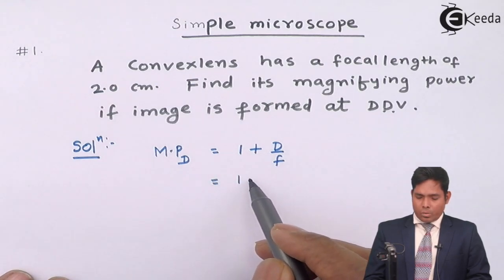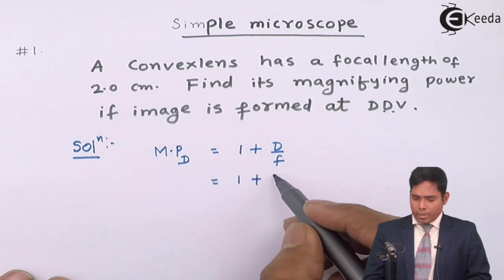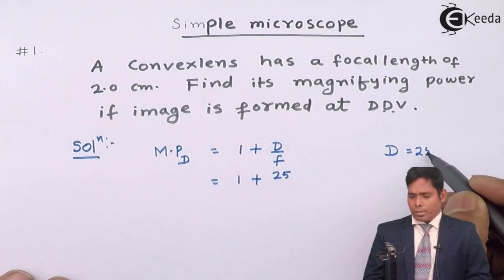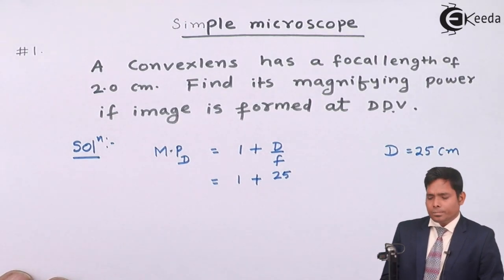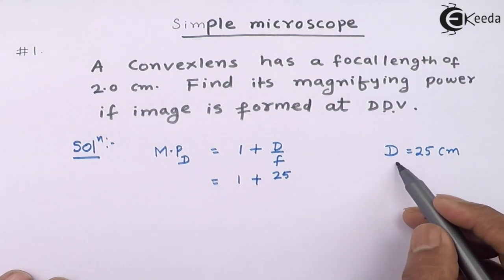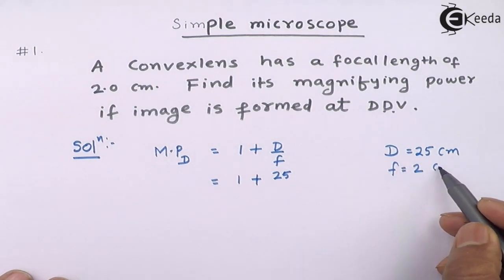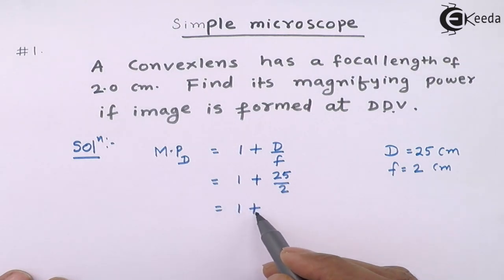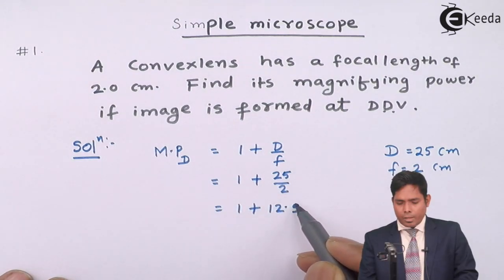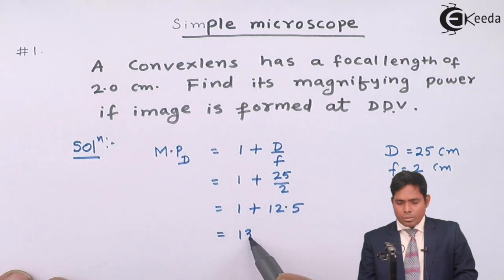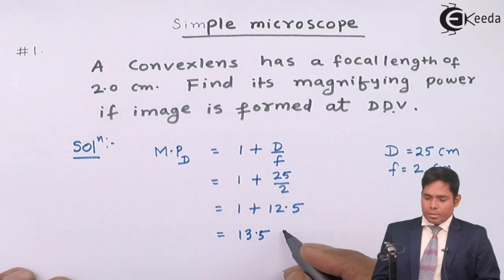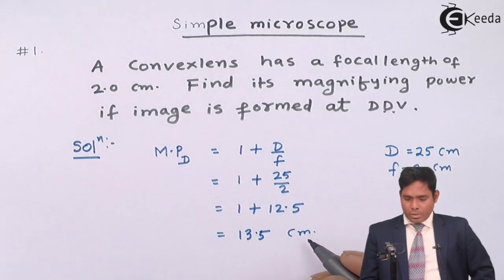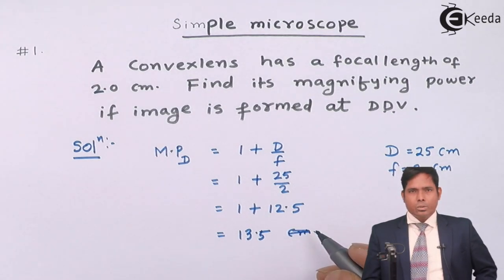Now, I put the value 1 plus D. I will take 25 cm because distance of distinct vision for a normal eye is 25 cm and the focal length given is 2 cm. So, it is divided by 2. It is 1 plus 12.5 which is equal to 13.5. So, it is 13.5. It has no unit.